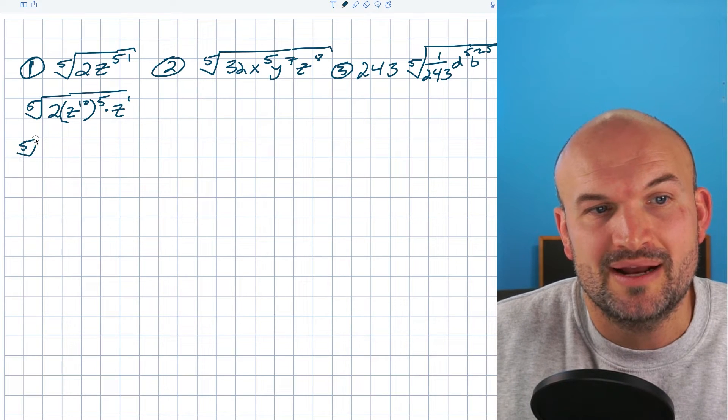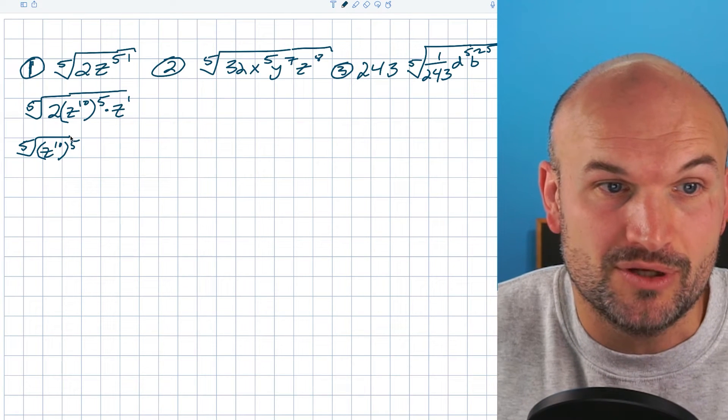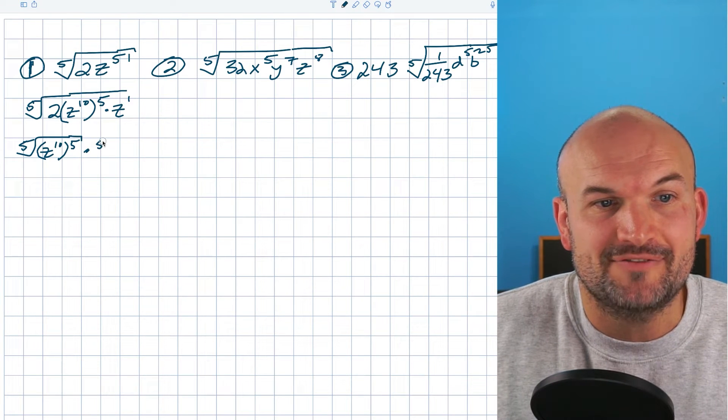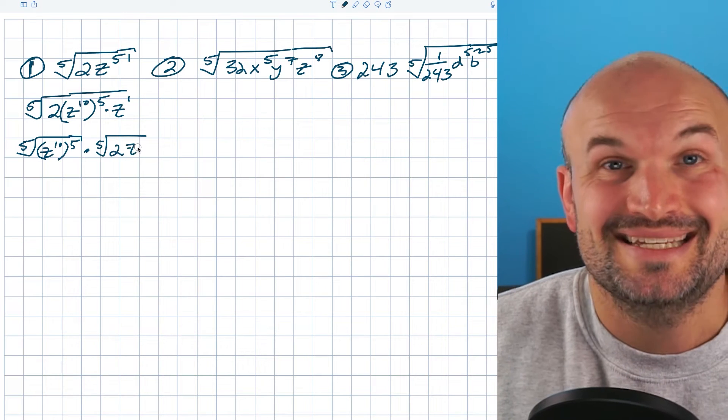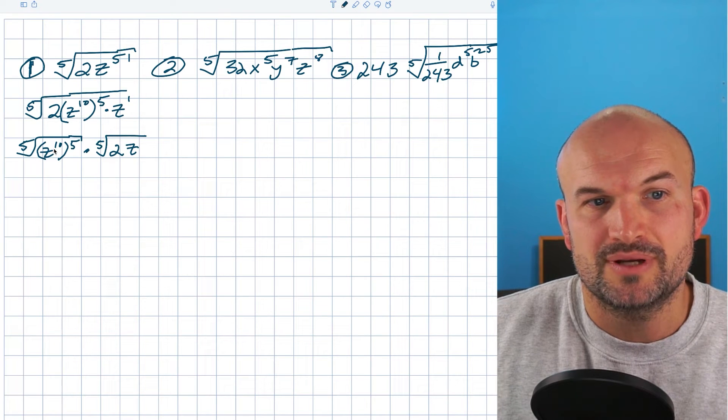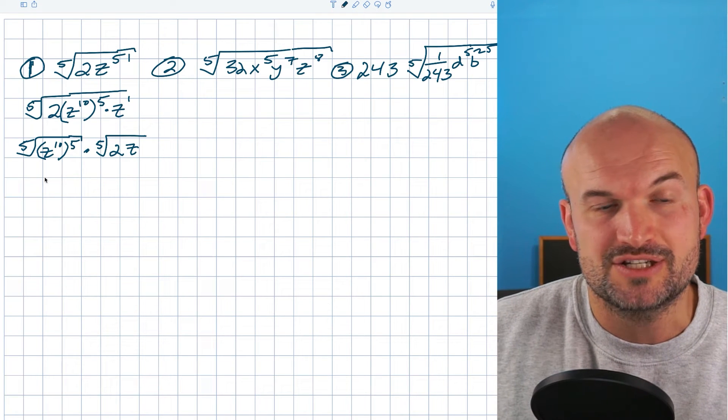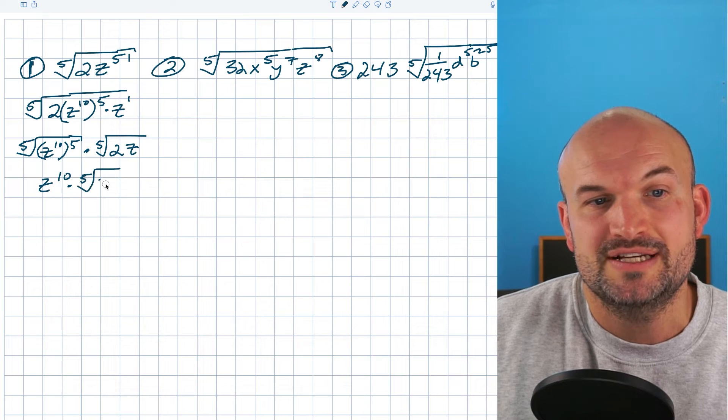So let's go ahead and break this up into stuff we can simplify and the stuff we cannot simplify. So I can rewrite this as z to the 10th raised to the fifth power. That's what I'm looking for. And then everything else is just going to have to remain under the radical. It can't come along for the ride. So that's going to be a two and a z. Recognize this follows that pattern that we first talked about. So the fifth root of this, since it's raised to the fifth power, is just going to be z to the 10th, and then that's going to be multiplied by the fifth root of 2z.